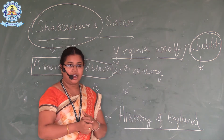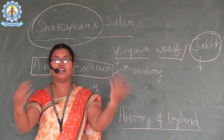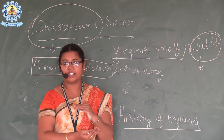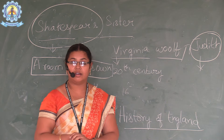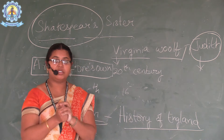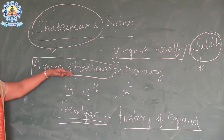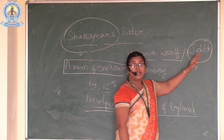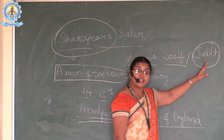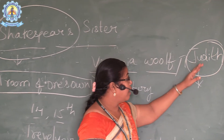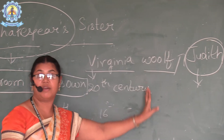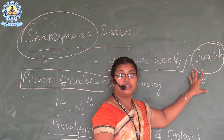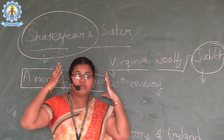Whatever genius work she had in her brain, she had to suppress it. She would secretly write some literary work but could not project it to the world. She used to hide the papers in her bedroom or burn them. Like all girls of that time, at the age of 14 or 15, her parents fixed her marriage. When Judith rejected the match, they beat her and locked her in a room.